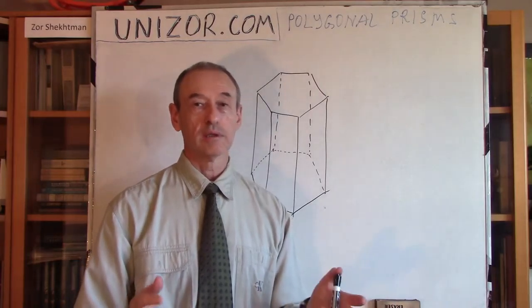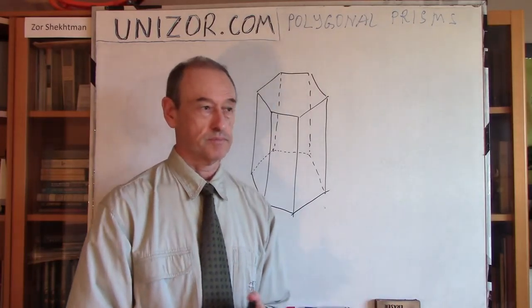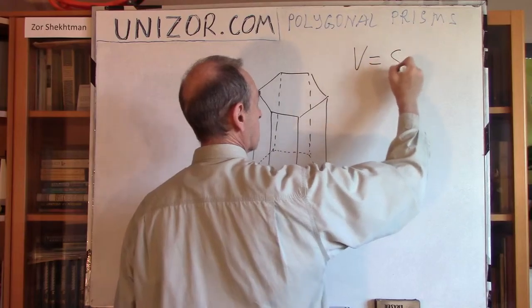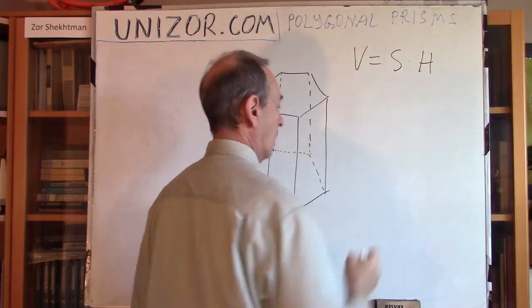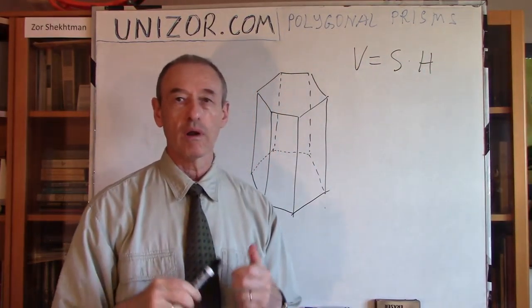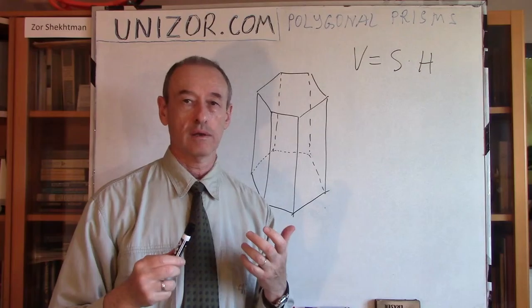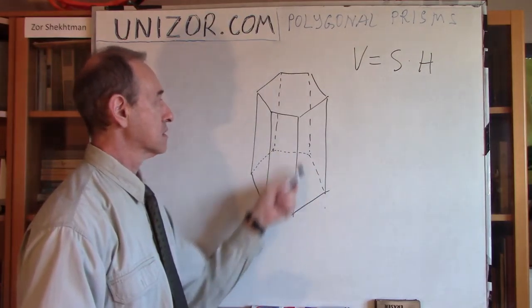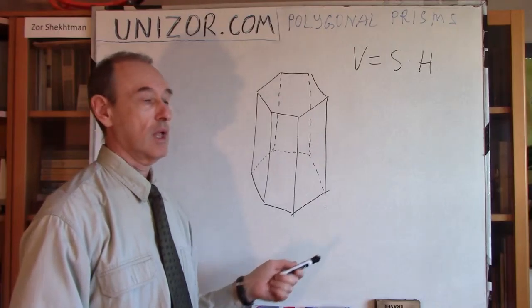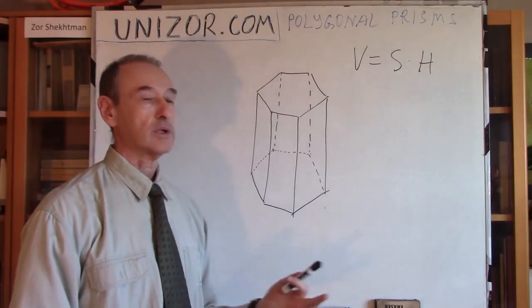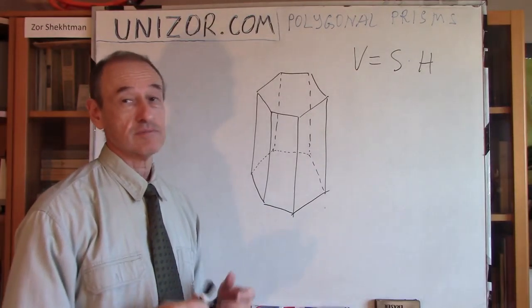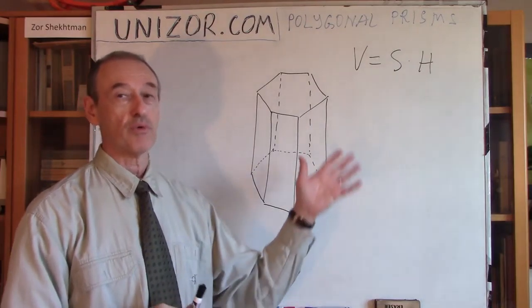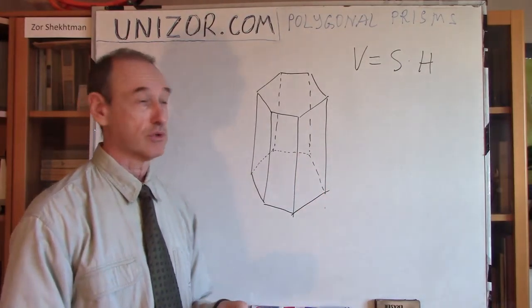What's important about polygonal prisms? First of all, I have the same formula for their volume, which is area of the base times the altitude. How can I prove it? Actually, this is much easier after we have already learned that the similar formula exists for a triangular prism.